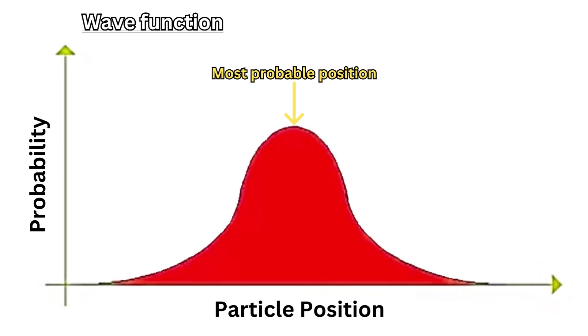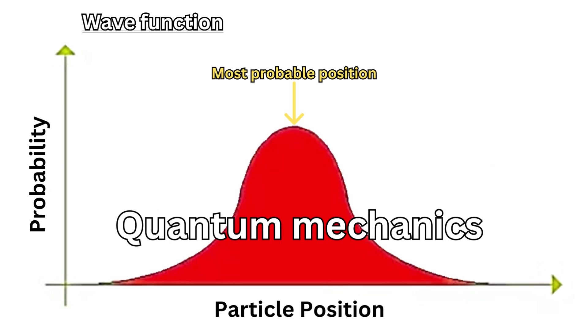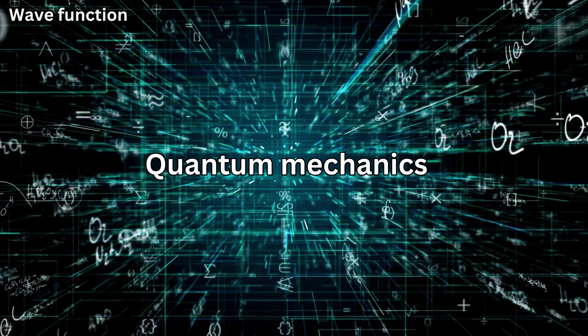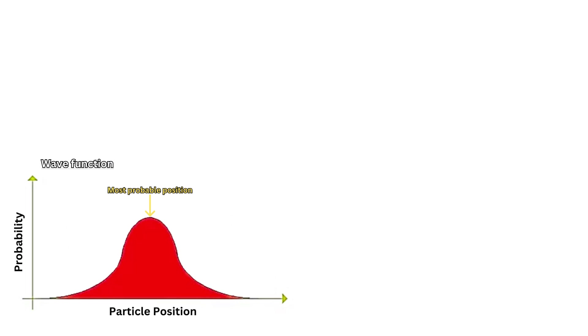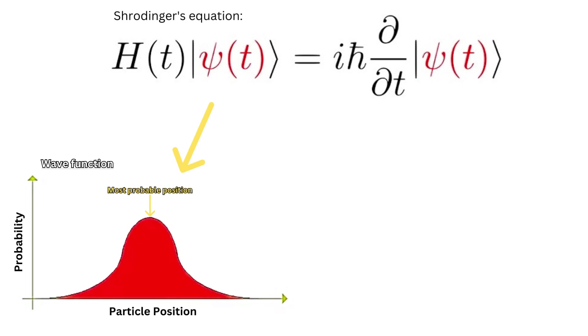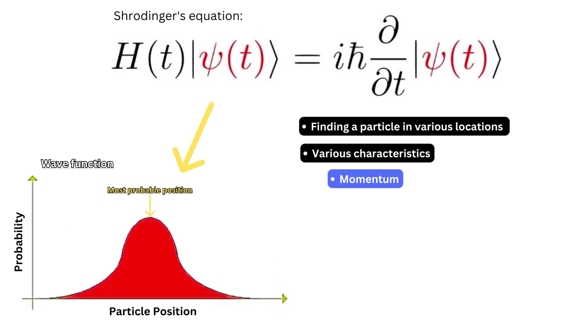It is important to note though, that quantum mechanics uses the wave function as a mathematical tool to explain how these particles behave. It is a complex equation that provides probabilities of finding a particle in various locations, or with various characteristics, such as momentum, or energy, when we conduct a measurement.